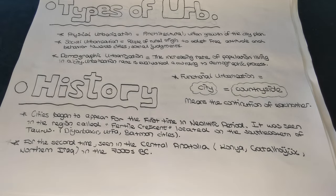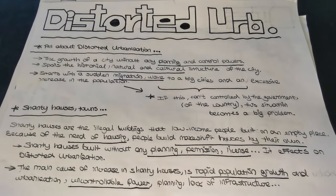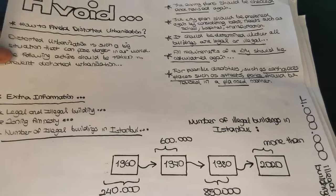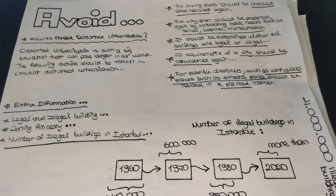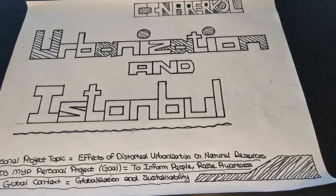That is basically what I talked about in the first video. Then I published the second video about distorted urbanization — what is distorted urbanization, what is the relation between shanty houses and distorted urbanization, the main causes and effects of distorted urbanization, and lastly how to avoid distorted urbanization. This is the summary of my two previous videos. So let's now talk about the relation between distorted urbanization and Istanbul.